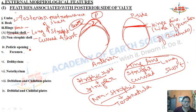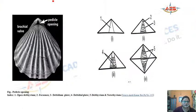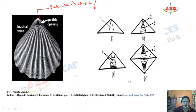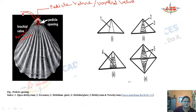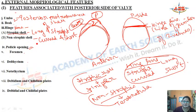The pedicle opening is the area on the pedicle valve through which the fleshy stalk-like pedicle comes out and attaches to the substrate. It is the passage for the pedicle so the organism can attach to the substrate.